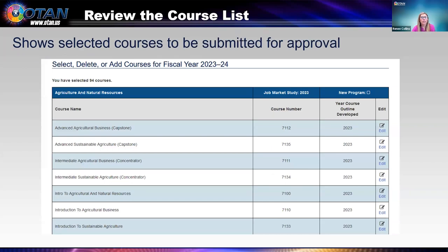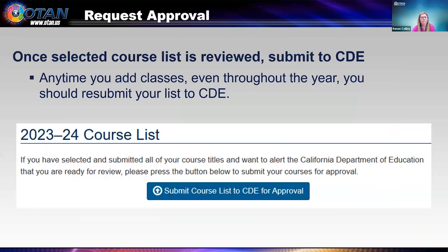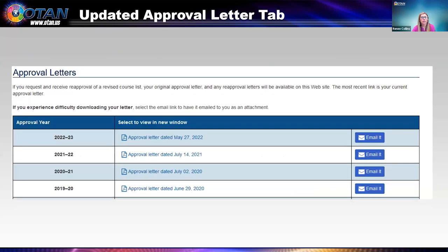Once you've completed your course selections, you will review the course list. On the review page, you have an opportunity to edit — if you need to edit something, you can click right in the box and it will take you directly to the page where you can make your edits. Once you've reviewed, you will want to submit your course list to CDE by clicking the blue button: submit course list to CDE for approval. Any time you add classes, even throughout the year, you should resubmit your list to CDE. Once approved, you'll have access to the electronic copy of your approval letter, and you'll also be able to see approval letters from prior years. You can download it or email it to yourself.